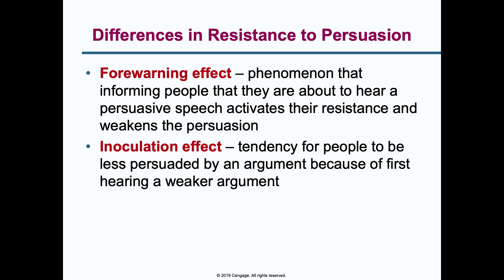People are more influenced to change their behaviors at certain times than others. The forewarning effect occurs when warning people they're about to hear a persuasive speech causes them to automatically start putting up resistance — like attending a timeshare seminar where you're already forewarned they'll try to sell you something, so your defenses go up. The inoculation effect is where people are less persuaded by a strong argument because they first heard a weaker version — having heard the weak argument helps build resistance to the stronger one, analogous to how a vaccine uses a weak virus to build immunity.